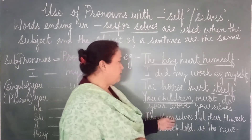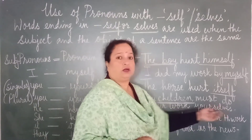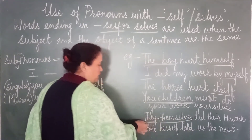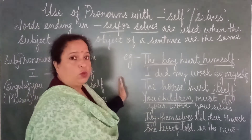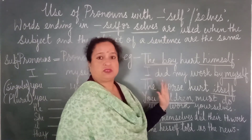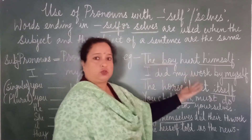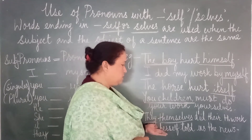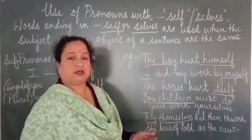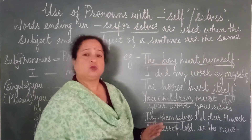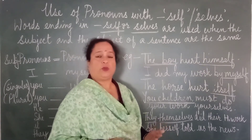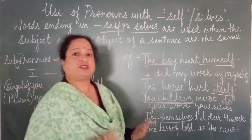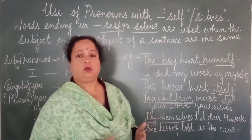Likewise, they themselves did the work. Now if you have a look children, I have added themselves right after the subject. In the previous sentences, we saw that the words himself, themselves, herself, itself were towards the end of the sentence — after the verb. But in the sentences below, they come after the subject. These sentences, where words like ourselves and himself come straight after the subject, they emphasize on the particular person who has done the work.